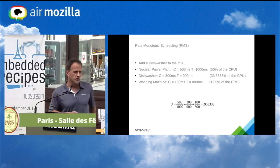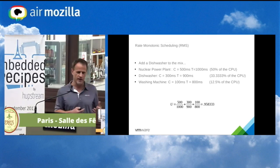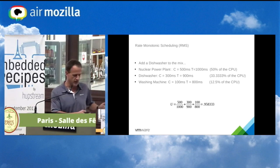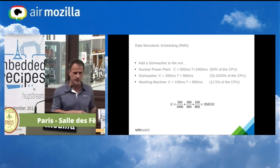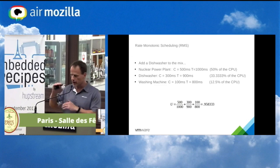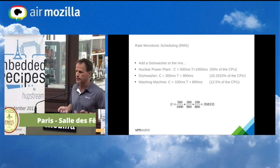Let's add a dishwasher to the mix because the engineers like their coffee and need their coffee mugs. We also have a more efficient washing machine — instead of taking 25% of the time it takes only 12.5%. Doing all the calculations: the utilization is computation time over a period. We have 95.8% of the CPU is all we need — less than 100%. So let's try it out.